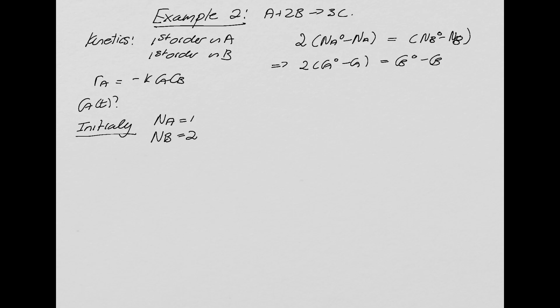And from this initial condition, this initial condition implies that Cb0 is equal to 2 Ca0. And so if I compare what I have written here, I see that I can cancel those, which gives me that Cb is equal to 2 Ca0.